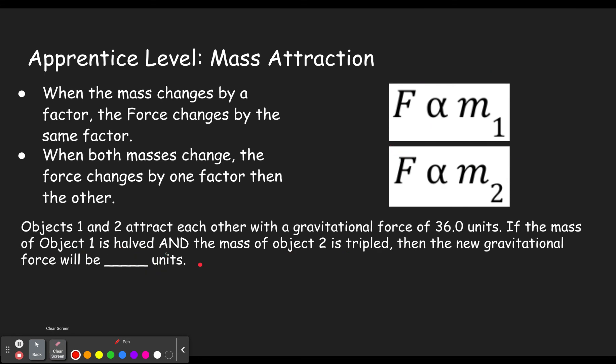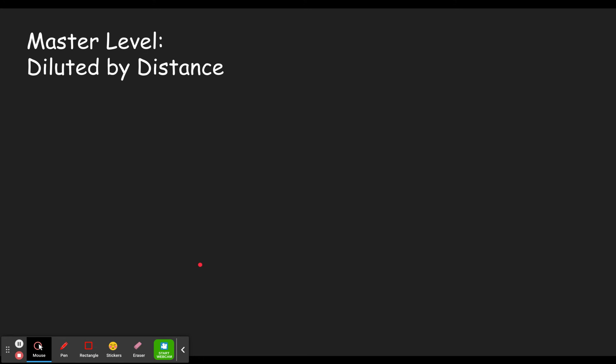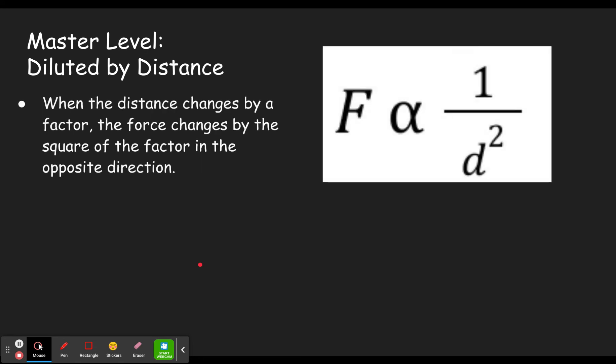All right, let's move on to the next level here. So in the next level called diluted by distance, you can guess we're changing the distance now. When the distance changes by a factor, so we change the distance by some factor, divide by six, the force changes by the square of the factor in the opposite direction. So if this was divided by six squared to be divided by 36, because it's inverse here we would multiply that by 36. All right, so once again this is inverse quadratic and let's go ahead and get into a sample problem.